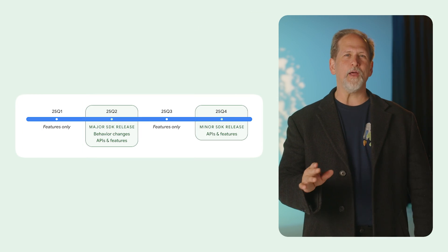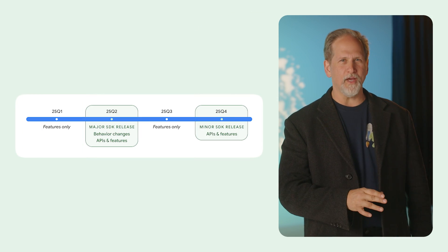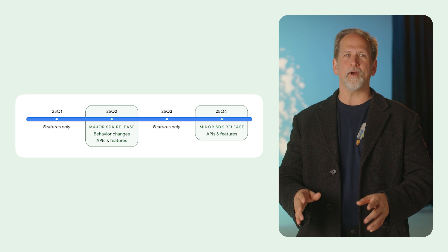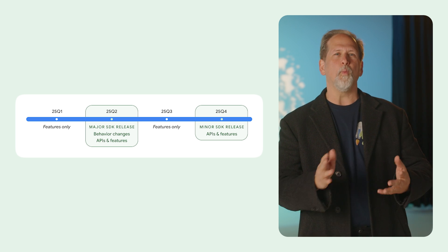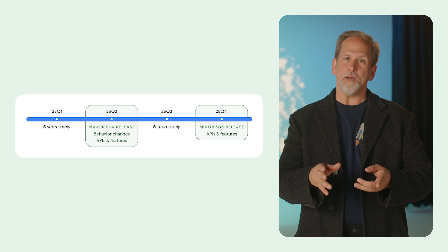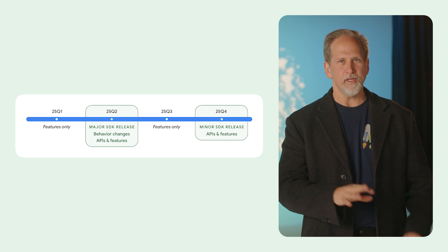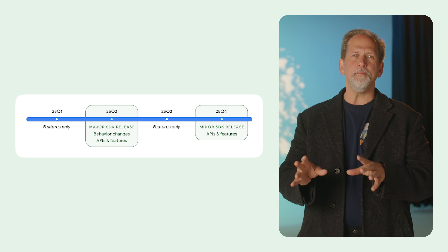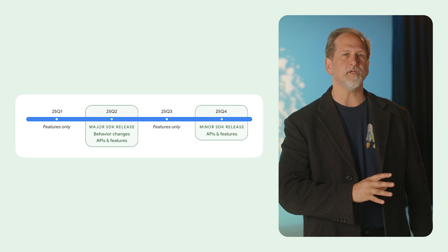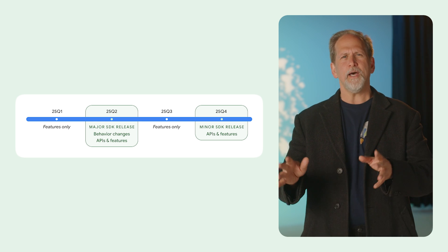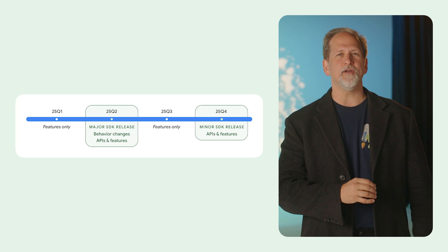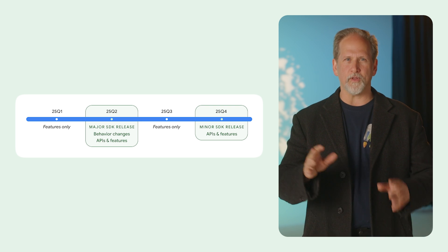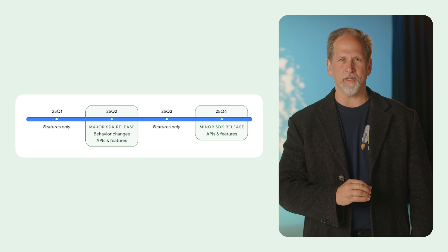In 2025, there will be a major Android API release in Q2 and a minor API release in Q4. The minor release in Q4 will include new APIs but will have no planned behavior changes, minimizing your need for compatibility testing. We've also moved the major release forward one quarter to Q2 of 2025 to better align with the schedules of major Android OEMs. We'll soon begin the developer preview and beta program for the Q2 2025 major release.